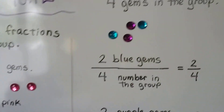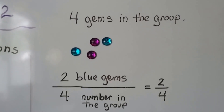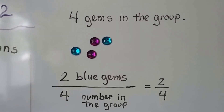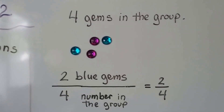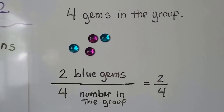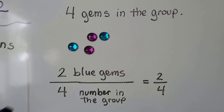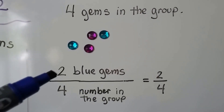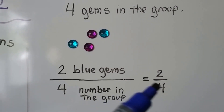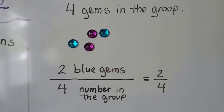Here we have four gems in the group — two blue gems. There's four gems in the group and two are blue, so two-fourths are purple.